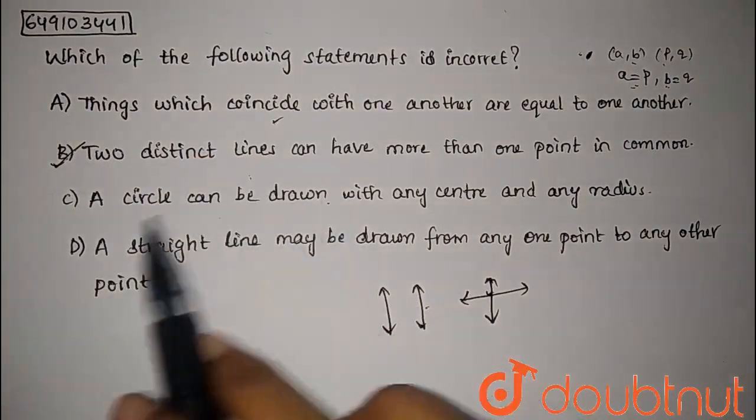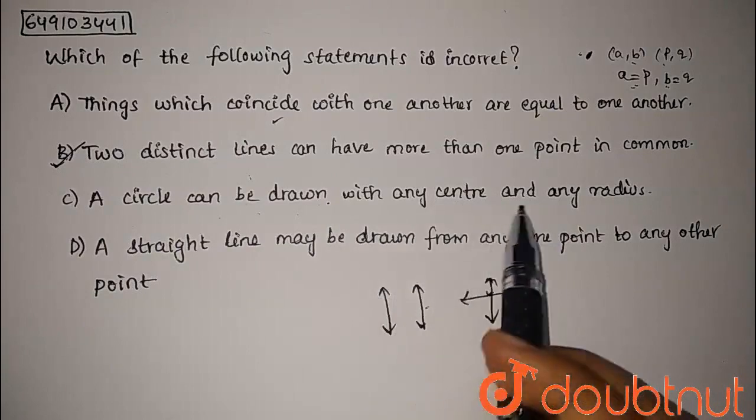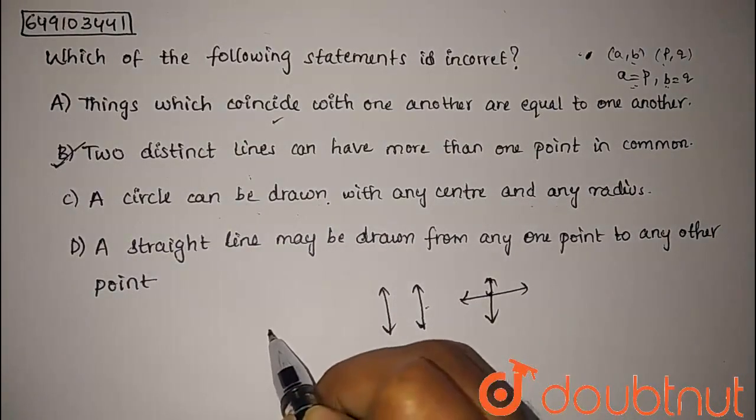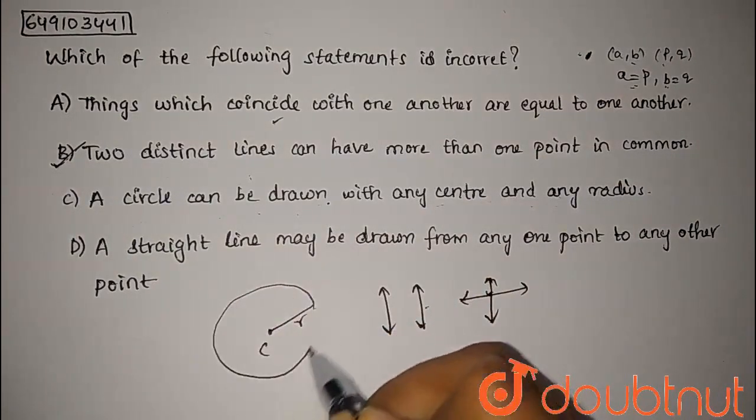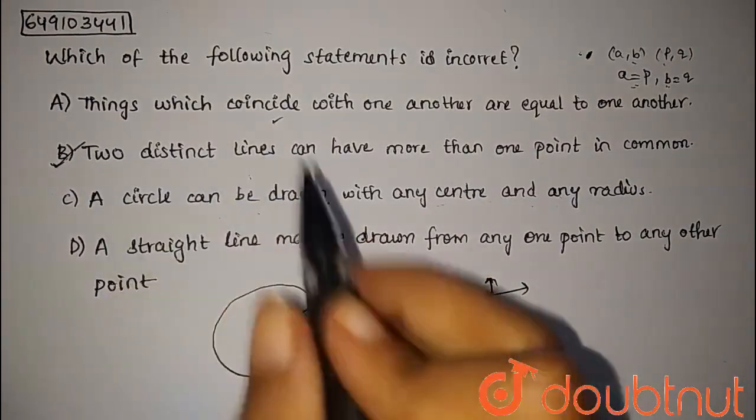The third statement: a circle can be drawn with any center and any radius. This is the right statement.